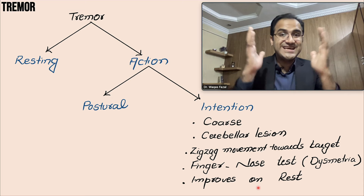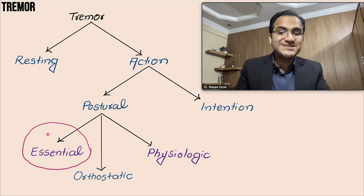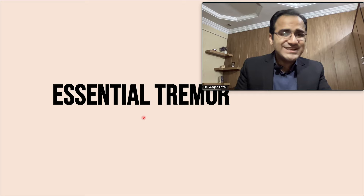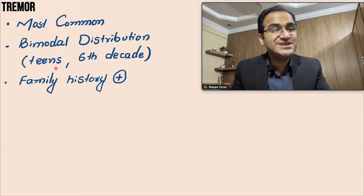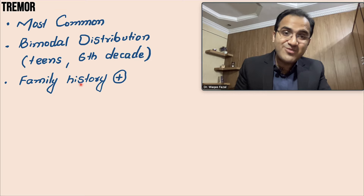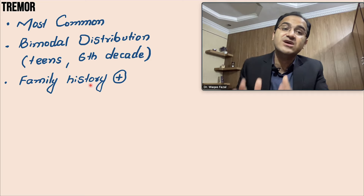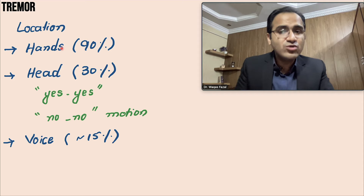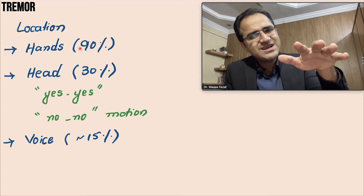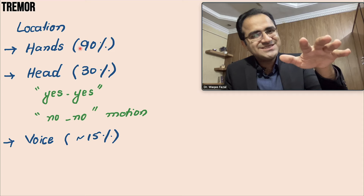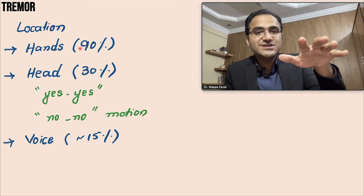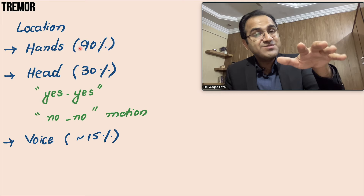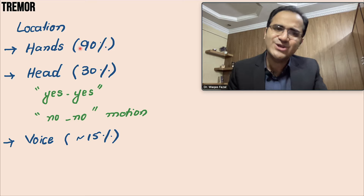Coming to postural tremor, which is divided into essential tremor, orthostatic tremor, and physiologic tremor. Essential tremor is the most common tremor found in people. It has a bimodal distribution — found in teens and then in the sixth decade of life. There is a positive family history and an autosomal dominant mutation is involved, so it runs in families. Essential tremor is most commonly found in the hands as a fine tremor that worsens when the person is anxious or stressed, and also worsens with stimulant drinks like coffee or tea.